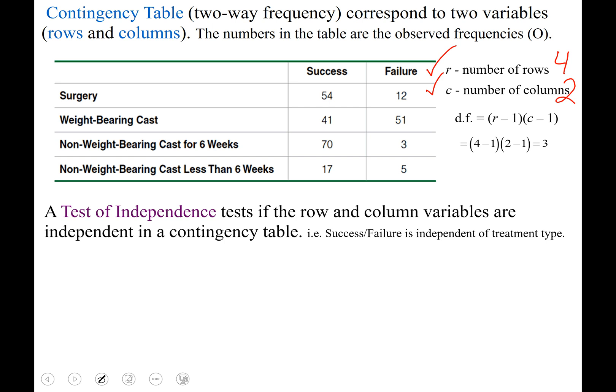We can run a test of independence, and that test is going to check if the row and column variables are dependent, or if they are independent on each other. So for example, here it's going to check if success and failure is dependent on the treatment type.